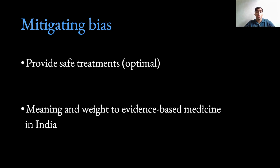How do we mitigate bias and what is the importance of mitigating bias? How to mitigate each bias will be answered along with the respective biases in the following videos. The importance of mitigating bias is to provide safe and optimal treatments to patients. Mitigating bias will ultimately lead to more fruitful research and give meaning and weight to evidence-based medicine, especially in India.